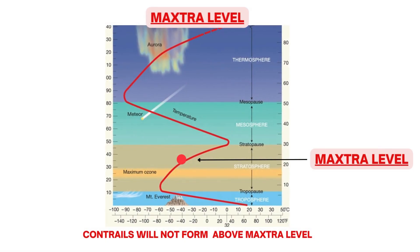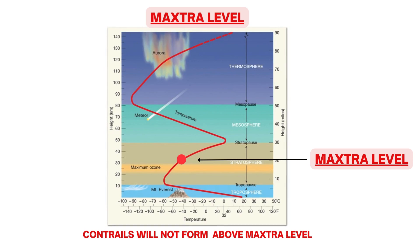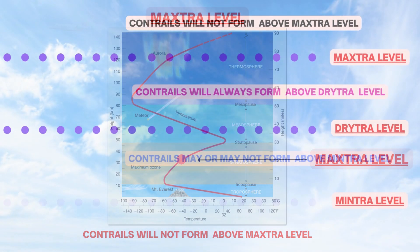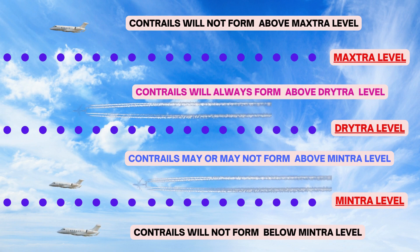Maxtra level is based on the fact that there is a limit to how far temperature drops in the troposphere — minus 56.5 degrees Celsius at 36,090 feet, as defined in the International Standard Atmosphere. After that, temperature is constant to 20 kilometers in the tropopause, and above the tropopause in the stratosphere, temperature starts to increase with height. So above a certain height, temperature will again be higher than minus 45 degrees, and contrails will not form. To summarize: below mintra level and above maxtra level, contrails will not form; above mintra level they may form; above dritra level they will definitely form.